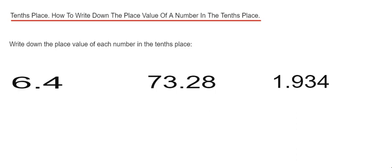Okay, so let's have a look at example one. Our first one is 6.4. The first number after the decimal point is 4, so this is our tenths place. We can write down the place value of the 4 as 4 tenths as a fraction, or if you want it as a decimal, you can write that as 0.4.